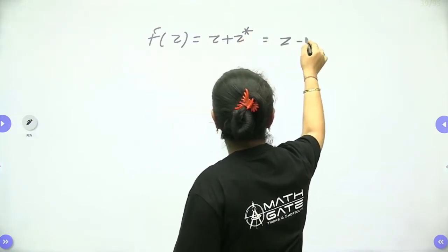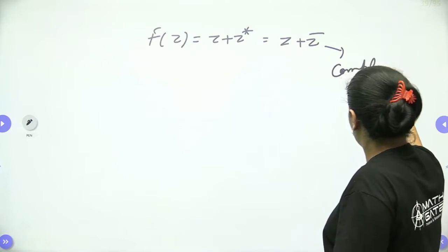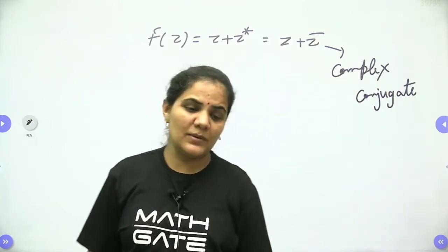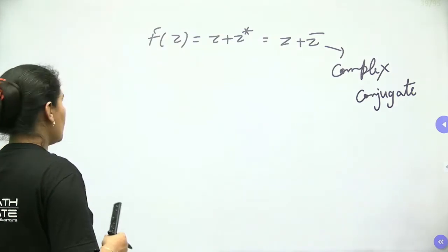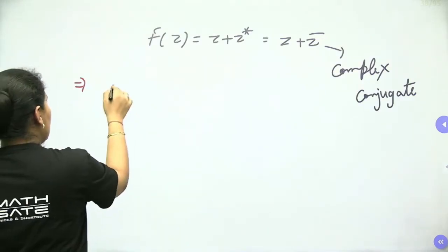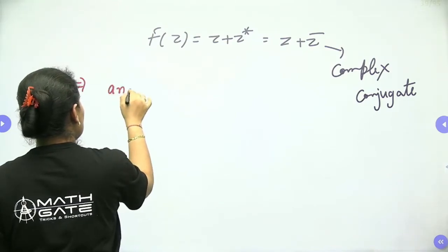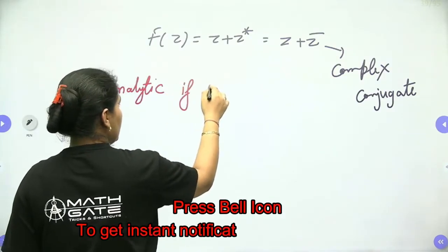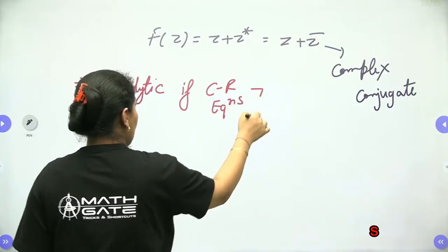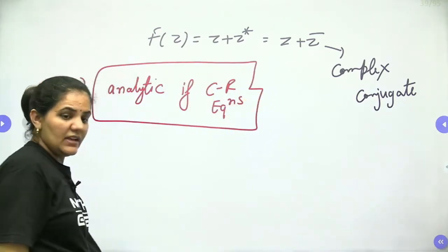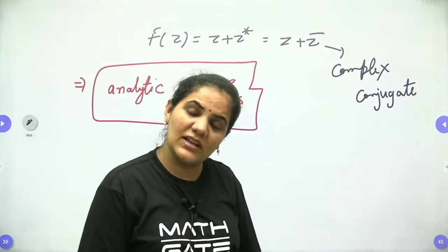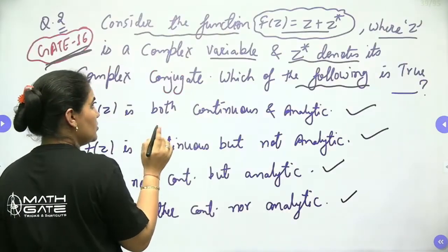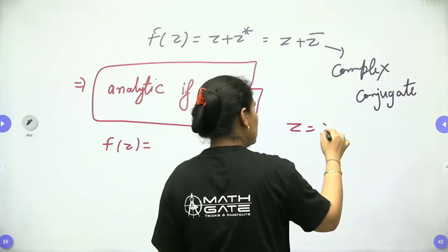We have f(z) equals z + z̄. Any function is analytic if the Cauchy-Riemann equation is satisfied. Let's approach the function clearly. Since z equals x + iy, the complex conjugate z̄ equals x minus iy.